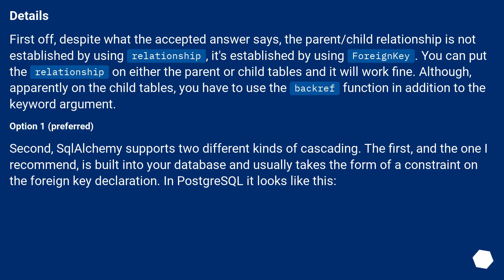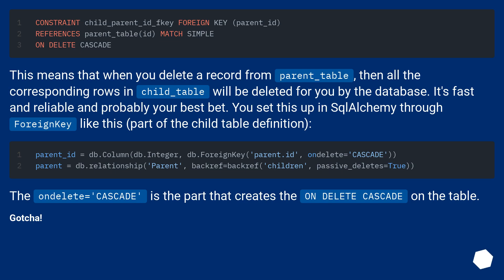SQLAlchemy supports two different kinds of cascading. The first, and the one I recommend, is built into your database and usually takes the form of a constraint on the foreign key declaration. In PostgreSQL it looks like this. This means that when you delete a record from parent_table, all the corresponding rows in child_table will be deleted by the database. It's fast and reliable and probably your best bet. You set this up in SQLAlchemy through foreign key like this, as part of the child table definition. The ON DELETE CASCADE is the part that creates the on-delete cascade on the table.